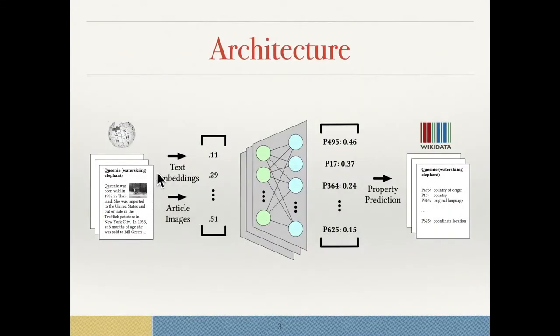Our architecture uses the embedding of multiple languages of Wikipedia and the article images, feeds it through a deep learning network, and can predict the properties which are missing for an entity.